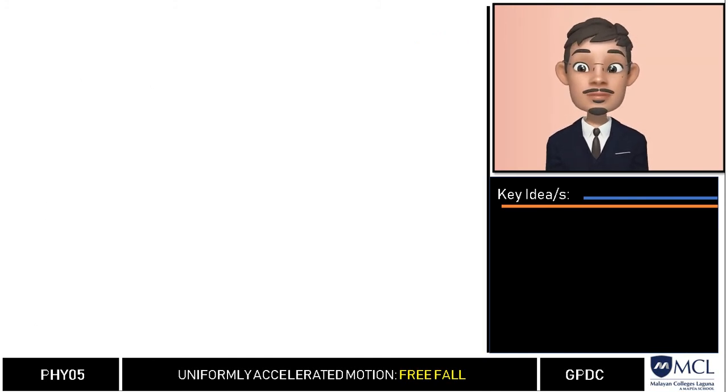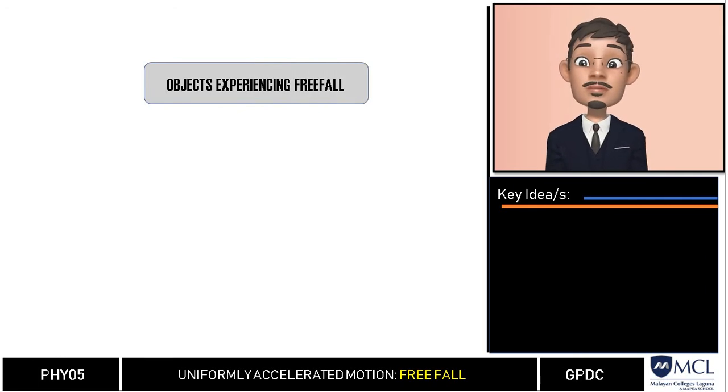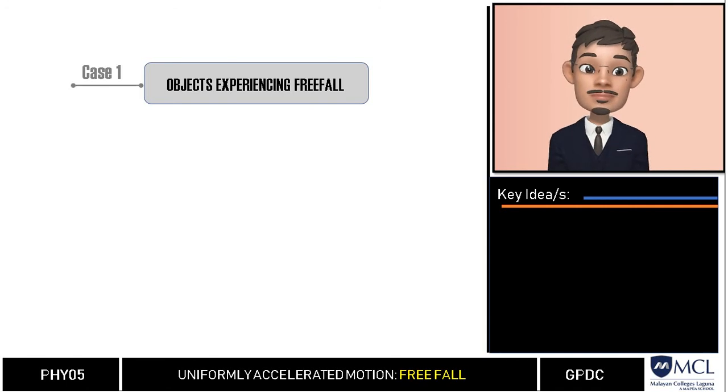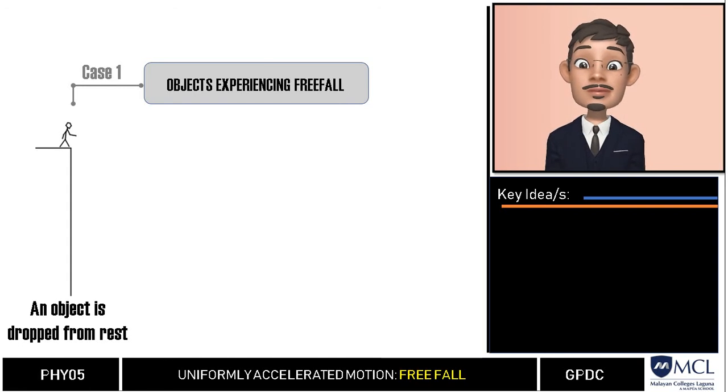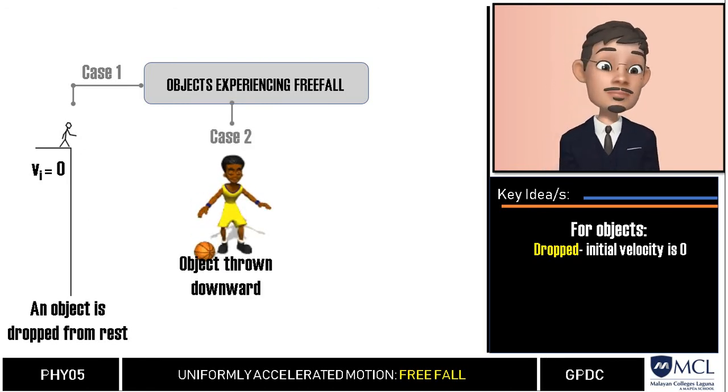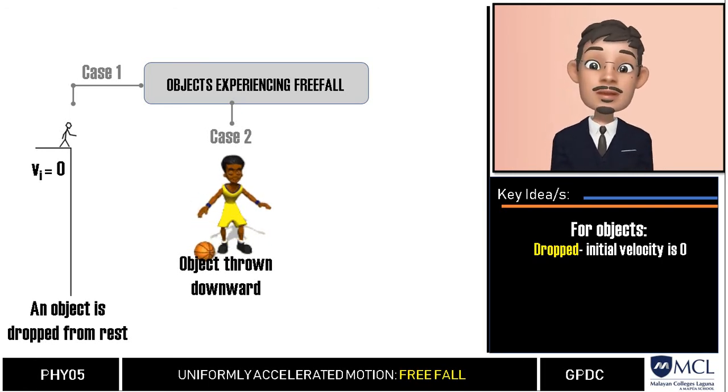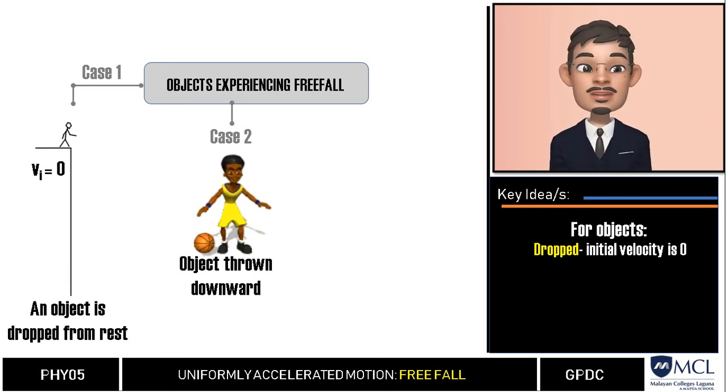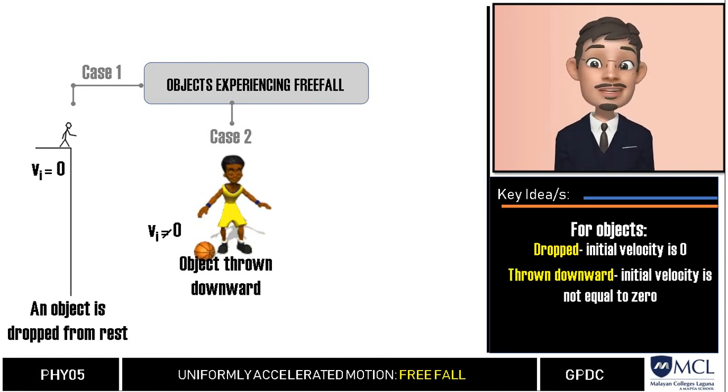Before I end this video, free fall is not only for objects dropped from a certain height. These also cover objects thrown downward and upward. We have three cases that must be taken into consideration. First, when an object is simply dropped from rest at a certain height, we have to assign its initial velocity automatically equal to zero and solely affected by constant acceleration g. How about when an object is thrown downward? In this case thrown and drop are different. Since it is still affected by gravity it also experiences constant acceleration. It is still covered by the concept of free fall, however the initial velocity has a value and is not equal to zero.